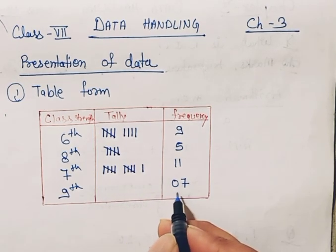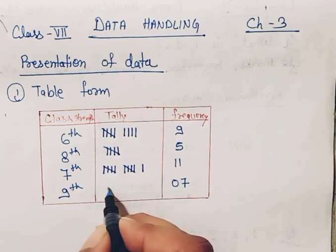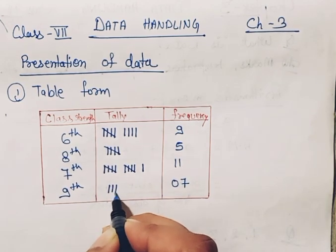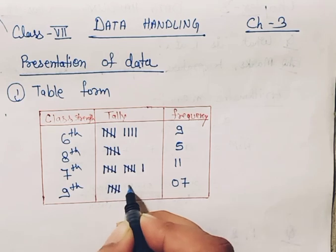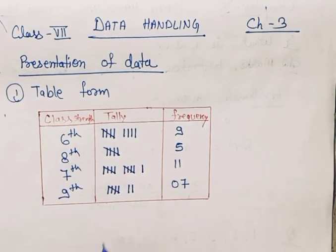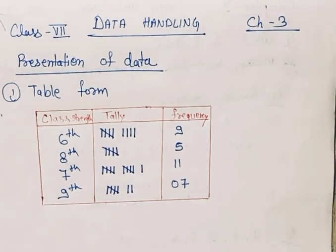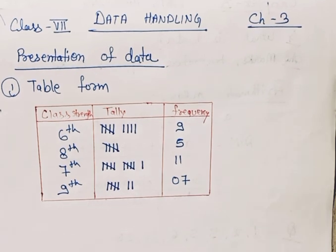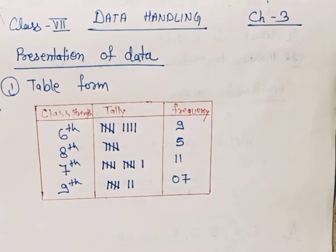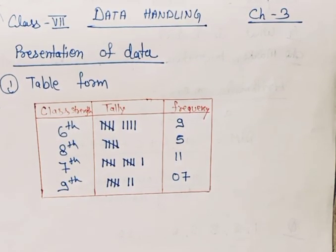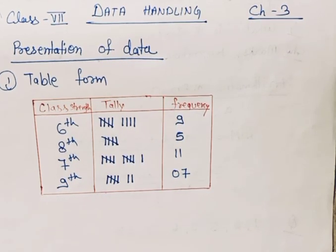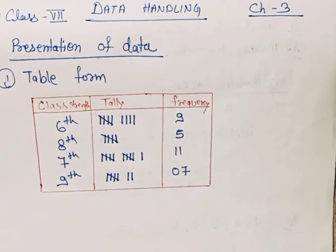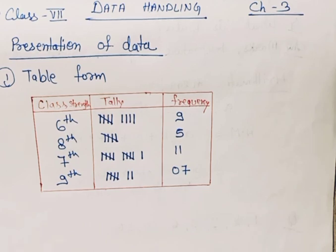Then coming to class 9th, it is number 7, so 1, 2, 3, 4, 5, 6, and 7. That is the tally method to represent our data in table form. We'll do some questions also in our next video. Thank you for today.